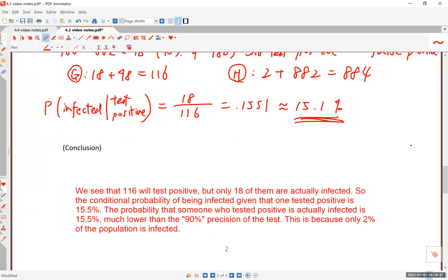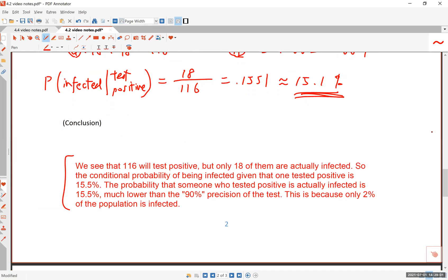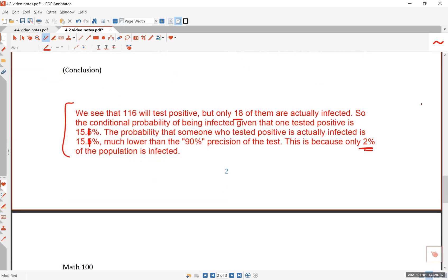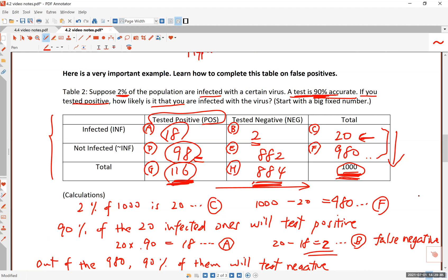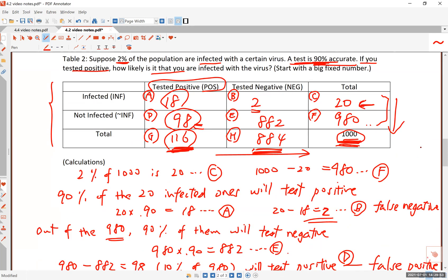The moral of the story is this: we see that 116 people will test positive, but only 18 of them are actually infected. So the conditional probability of being infected given that you test positive is only 15.5%, much lower than the 90% precision of the test. That's because only 2% of the population is infected. This is huge. I consider this table to be one of the most important things for you to see in this course, understanding some easily misunderstood concepts in public health.